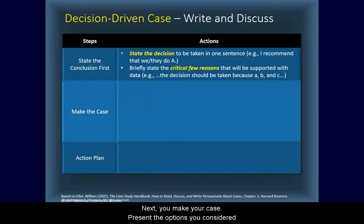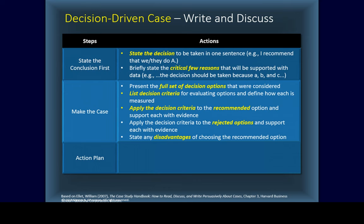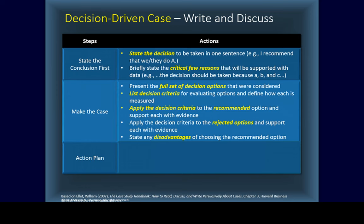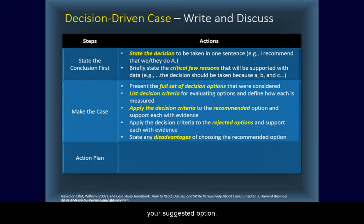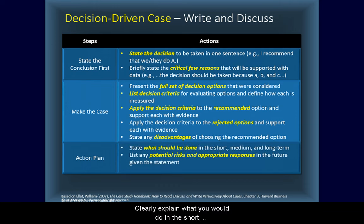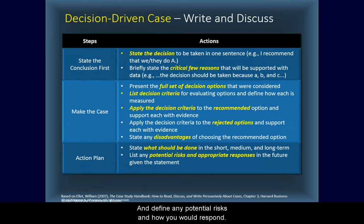Next, you make your case. Present the options you considered and the decision criteria that you used to evaluate the options. Explain how the decision criteria fit the recommended option and show how the same criteria did not support other options. Finally, acknowledge any potential disadvantages to your suggested option. Then you state your action plan: clearly explain what you would do in the short, medium, and long term, and define any potential risks and how you would respond.